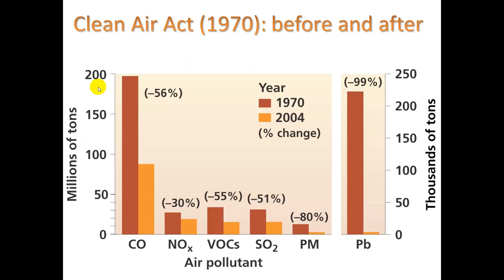The Clean Air Act was enacted in 1970, and you can see the changes before and after. Carbon monoxide emissions were reduced by half, NOx by about a third, VOCs by half, sulfur oxides by half, particulate matter by 80%, and lead by 99%.